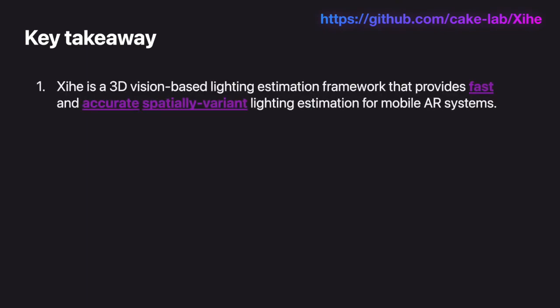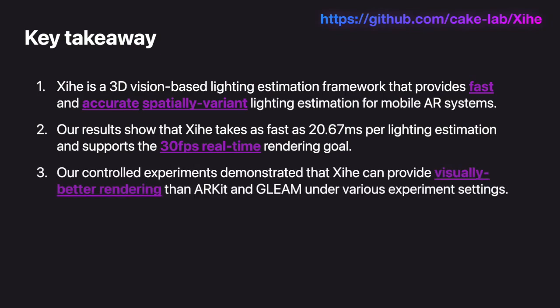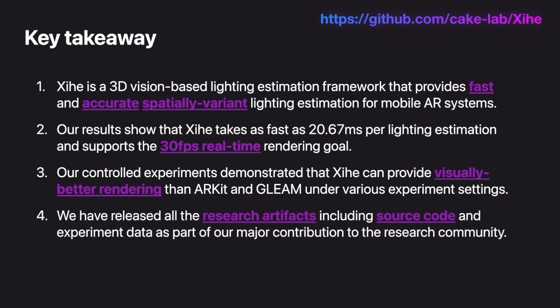To wrap up, XIHE is a 3D vision-based lighting estimation framework that provides fast and accurate spatially varying lighting estimation for mobile AR systems. Our results show that XIHE can support the 30 frames per second real-time rendering goal. Our controlled experiment demonstrated that XIHE can provide visually better rendering than ARKit and GLEAM under various experiment settings. Finally, we have released all the research artifacts, including source code and experiment data, as part of our major contribution to the research community.